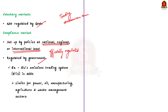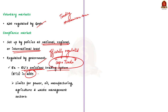Today, compliance markets mostly operate under a principle called cap and trade, which is very popular in the European Union. Under the European Union's Emissions Trading System, launched in the year 2005, member countries set a limit or cap for emissions in different sectors such as power, oil, manufacturing, agriculture and even waste management. If they exceed these limits, they have to buy carbon credits.